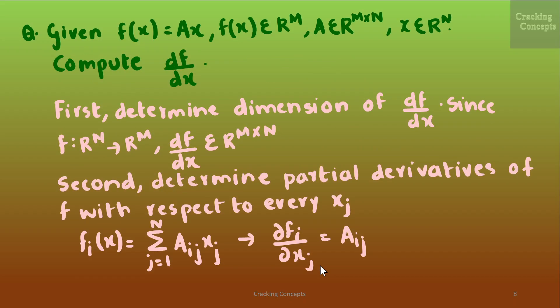Now we will see how to calculate the gradient of a vector valued function through an example. We are given the function f = Ax, where f belongs to ℝᵐ, A belongs to ℝᵐˣⁿ, and x belongs to ℝⁿ. We need to compute the gradient df/dx. First, we determine the dimension of df/dx. Since f is a mapping from ℝⁿ to ℝᵐ, it follows that df/dx will have dimension m×n.